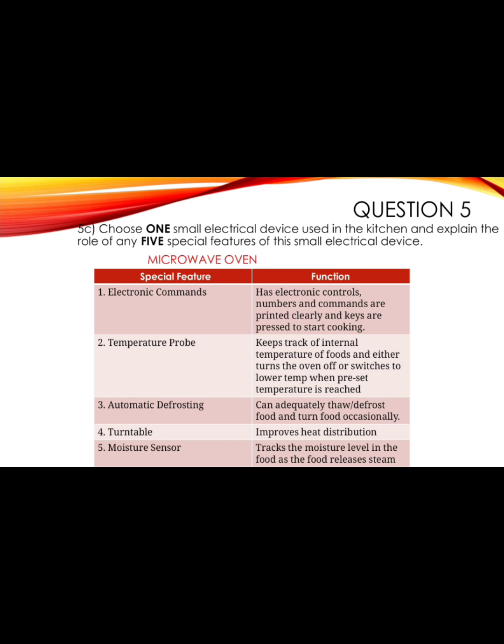The next question asks you to choose one small electrical device and explain five special features. I selected the microwave oven. Its features include: electronic controls with clearly printed numbers and commands pressed to start cooking; a temperature probe that tracks internal food temperature and turns the oven off or switches to lower temperature when a preset is reached; automatic defrosting to thaw food and turn it occasionally; a turntable that improves heat distribution; and a moisture sensor that tracks moisture level as food releases steam.